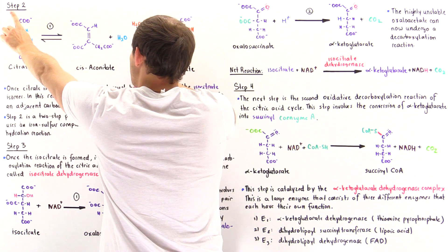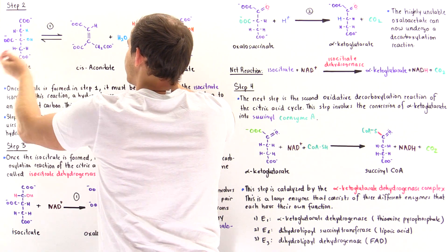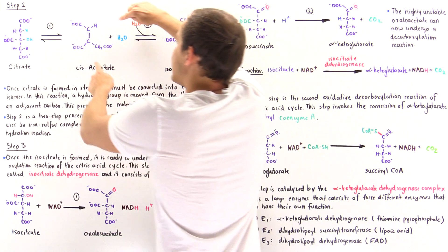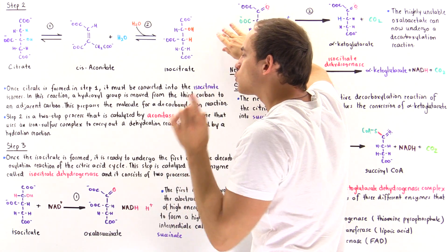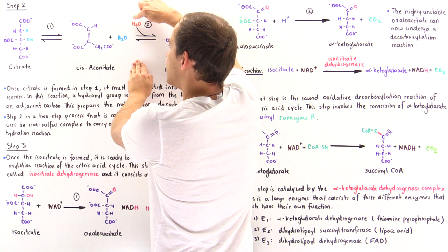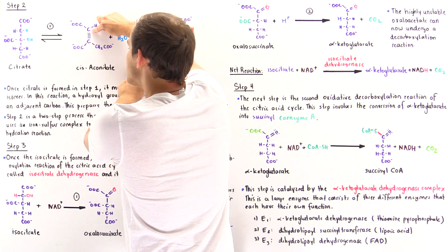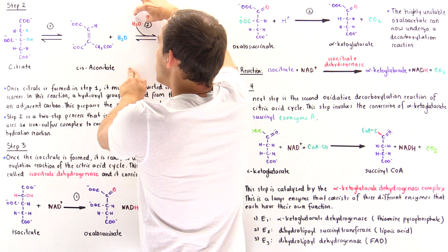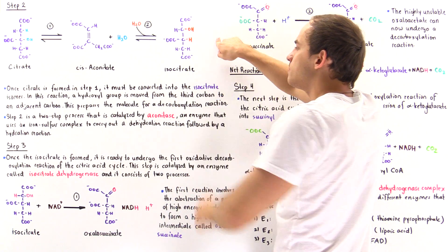In the first part of step two, a dehydration reaction removes the hydroxyl group along with an H to form a water molecule and a double bond between two carbons. Then in the second part, water undergoes a hydration reaction acting as a nucleophile. Instead of attacking the more hindered carbon — which would simply reform citrate — the water attacks the less hindered carbon, forming the isocitrate molecule.